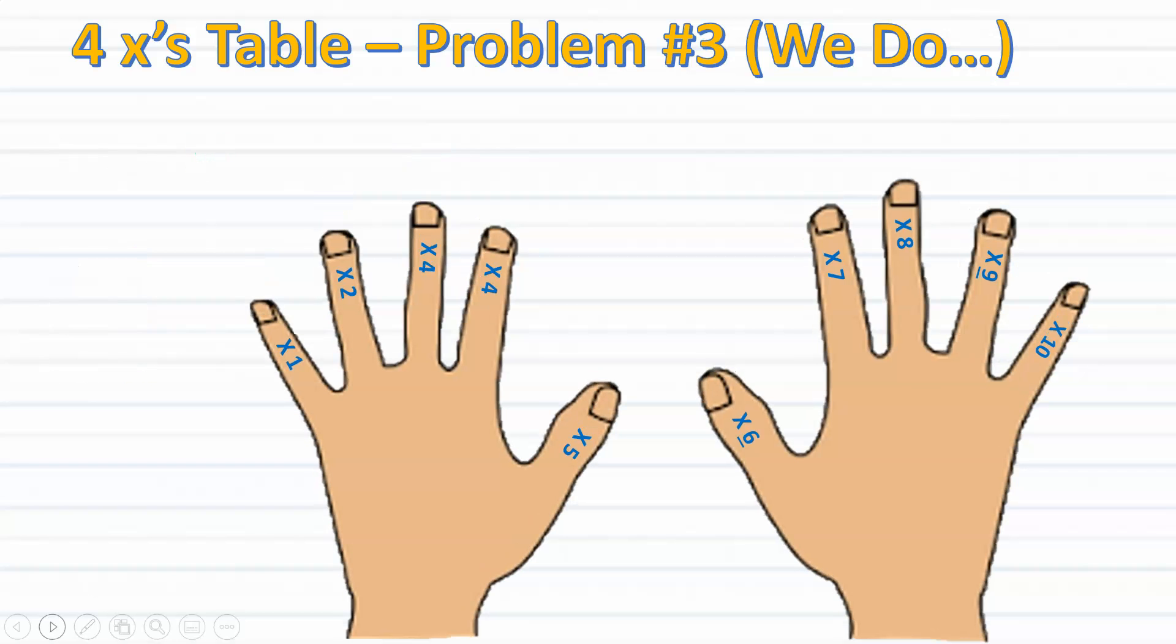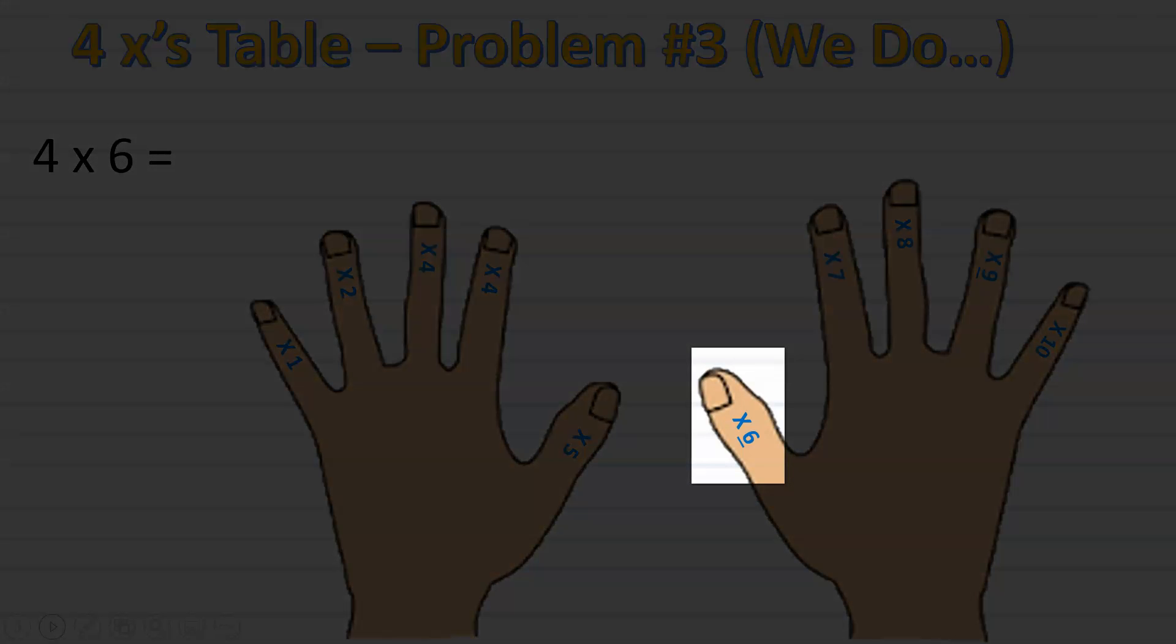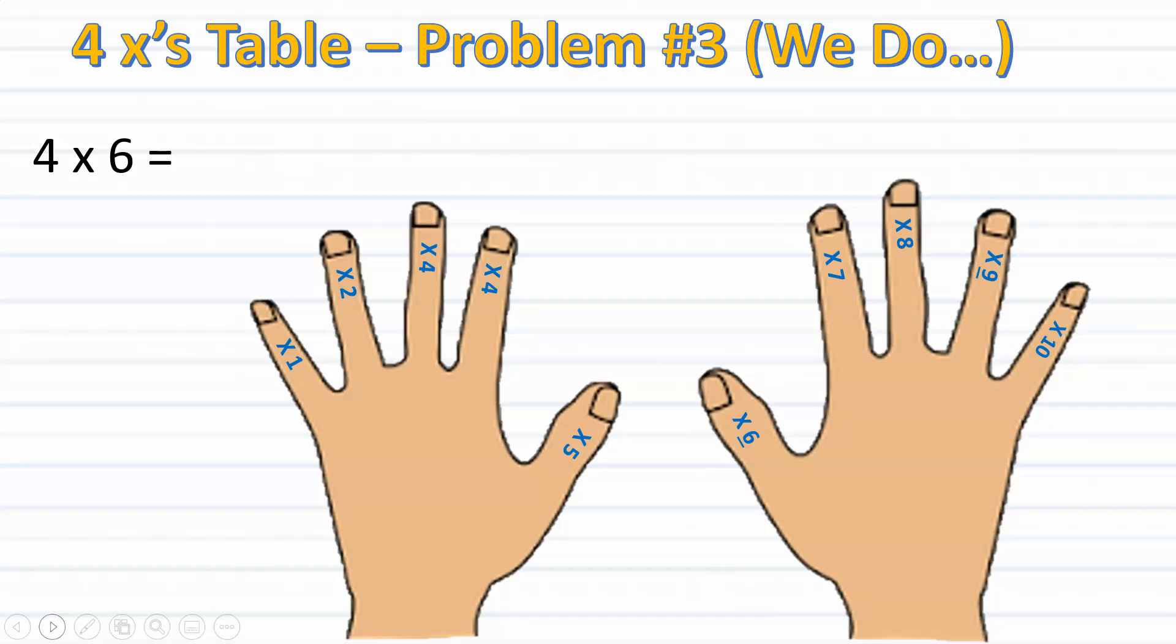Time to solve another one together. This time, we'll solve for 4 times 6. Remember, we'll be stopping at our sixth finger. And once we land on our sixth finger, that's the product. Let's begin. 4, 8, 12, 16, 20, 24. Since I stopped at my sixth finger and I said 24 last, then I know that 4 times 6 is 24.